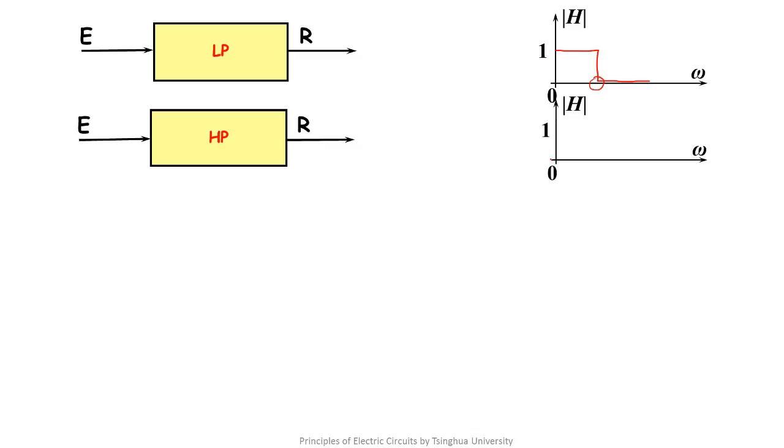Similarly, for the high-pass filter, the low-frequency signal is attenuated and the high-frequency signal remains the same. The so-called band-pass filter refers that some frequency-band signal can pass and the rest is attenuated.